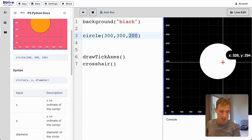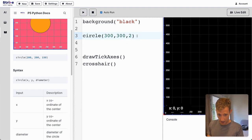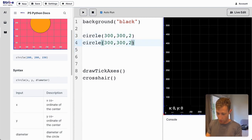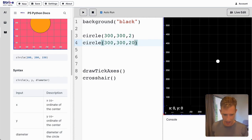It has a diameter of 200, which controls the size of the circle. If I make this 2, you'll barely see it. If I add another circle and make it 2000, it's going to take over the whole screen. 200 seems about right, 20 is too small. Let's do 200.